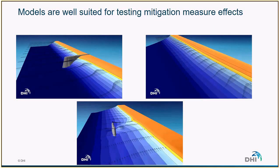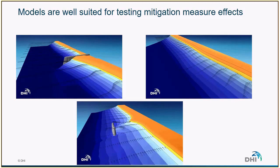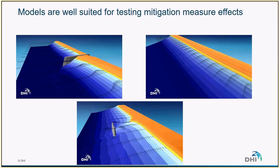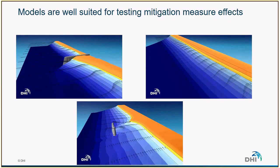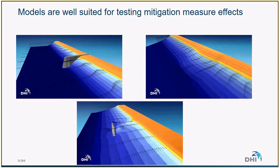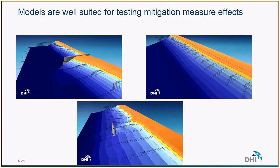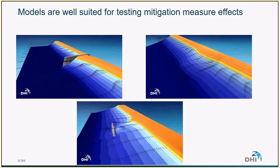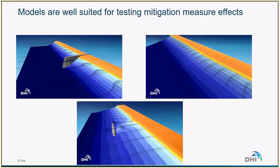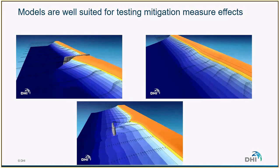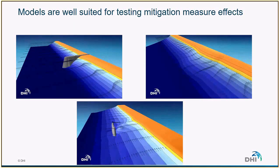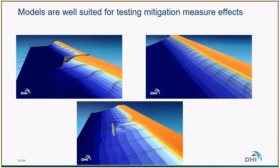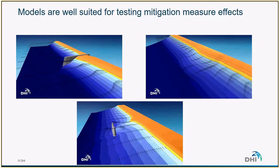Numerical models are a great tool for testing different types of mitigation measures. Here is an example of a coast where a groin, a shore-parallel breakwater, and nourishment are tested in three separate cases. The numerical model helps identifying the shoreline response: for the groin, there is accumulation on one side and erosion on the other; for the shore-parallel breakwater, a salient forms locally; and for the nourishment, the sand is transported away from its original location, meaning re-nourishment will be required.